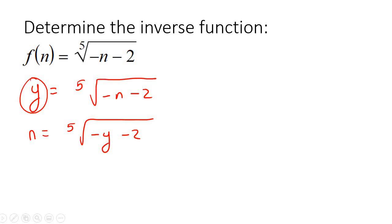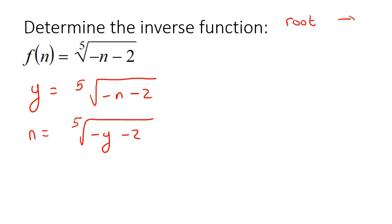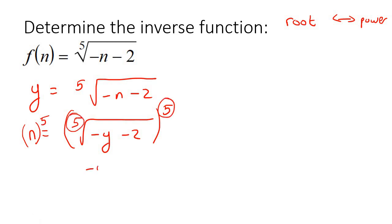Your next goal is to get the y by itself or alone. The way we could do that is we first need to get rid of this 5 — this is a fifth root. The opposite of a root is a power, so what we'll do is raise both sides to the fifth power. What this 5 will do is cancel out this root. In the next step, you're just going to end up with negative y take away 2, and on the left you're going to be left with n to the fifth.